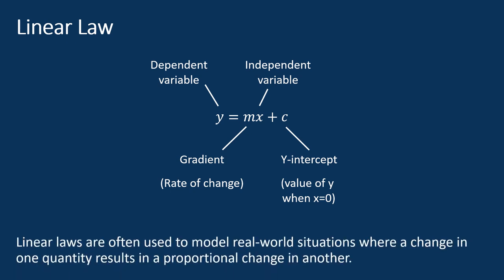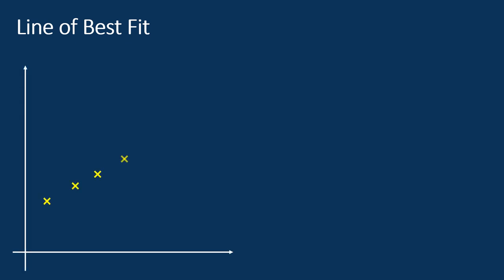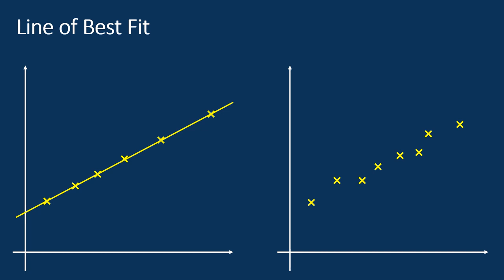Linear laws are often used to model real-world situations where a change in one quantity results in a proportional change in another. In this video, we are going to learn how to plot the graph and draw a line of best fit. When plotting a graph, a straight line can be drawn when the values of the variables of a linear relationship are supplied. However, if the values are obtained experimentally or by observation, inaccuracies may occur, and not all plotted points will lie exactly on a straight line. In this case, we must draw a line of best fit.